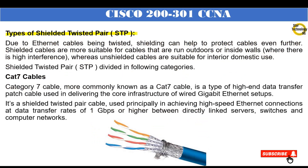Types of shielded twisted pair (STP). Due to ethernet cables being twisted, shielding can help to protect cables even further. Shielded cables are more suitable for cables run outdoors or inside walls where there is high interference, whereas unshielded cables are suitable for interior domestic use. CAT7 cables: Category 7, commonly known as CAT7, is a high-end data transfer patch cable used in delivering the core infrastructure of wired gigabit ethernet setups. It's a shielded twisted pair cable used for high-speed ethernet connections at data transfer rates of 1 Gbps or higher between servers, switches, and computer networks.